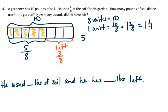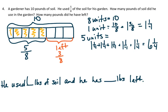So, if 1 unit is 1 and 1 fourths, 5 units is going to be 1 and 1 fourths, plus 1 and 1 fourths, plus 1 and 1 fourths, which is equal to 6 and 1 fourths. So he used 6 and 1 fourths pounds of soil, and now I need to figure out how much he has left.